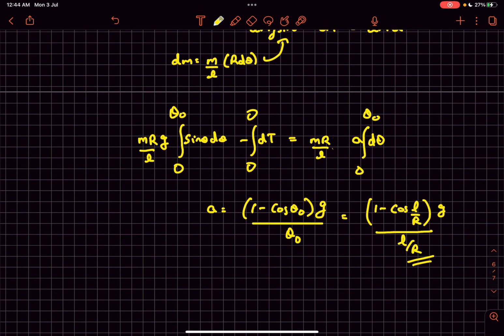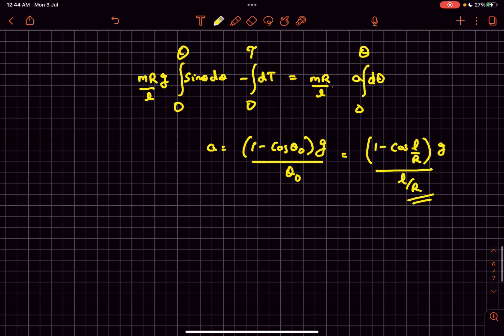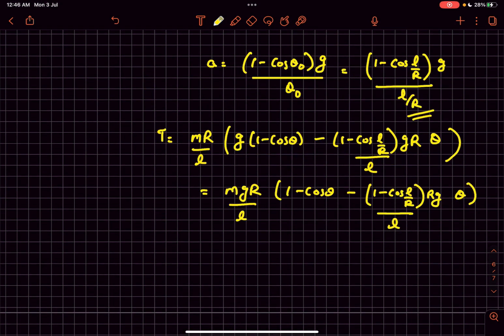Now for tension as a function of theta, I'm going to change the limits and integrate to a general theta. From here we'll get tension T as a function of theta. Now if we just differentiate it, dT/d theta - the derivative of negative cos theta is sine theta.